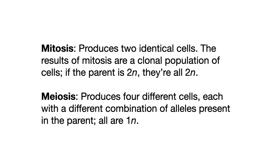In summary: mitosis produces two identical cells — the whole intent is to maintain the same genetic material from generation to generation. The result of mitosis is a clonal population of cells, all 2N if the parent is 2N. Meiosis, on the other hand, produces four different cells. Out of the meiotic process we get diversity rather than uniformity. Each of those four cells is 1N and has a different arrangement of genes and chromosomes present in the parent.